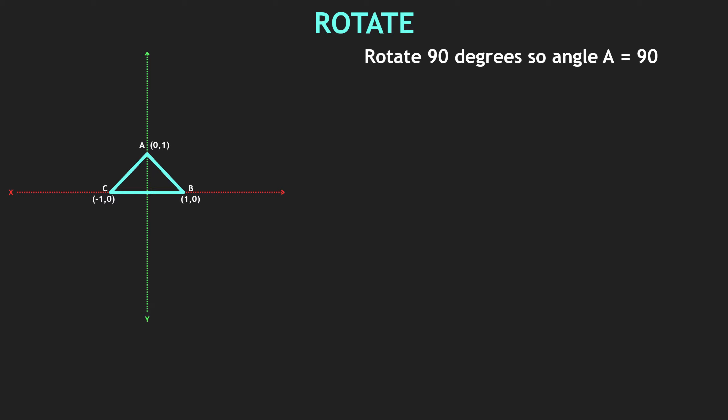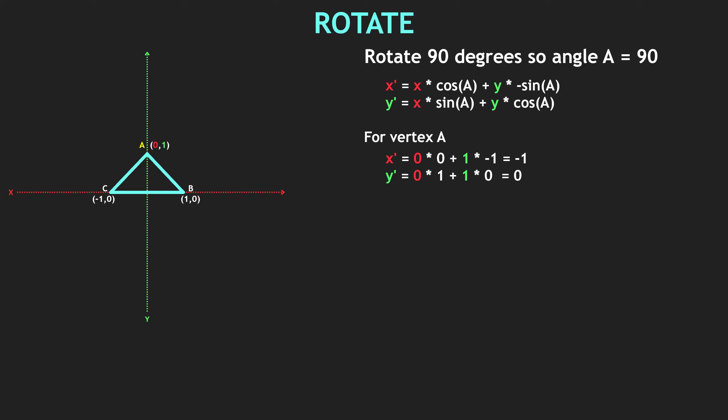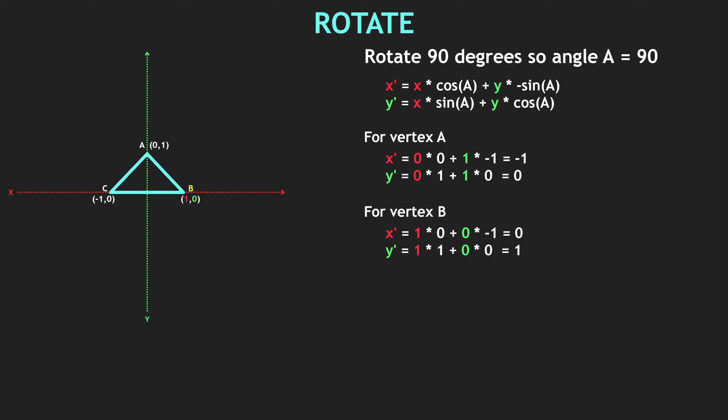Now let's go to rotation. Rotation is a bit complicated and involves trigonometry. Let's take our triangle and we want to rotate it 90 degrees. Trigonometry tells us that for any given angle A, new x = old x × cos(A) + old y × (−sin(A)), and new y = old x × sin(A) + old y × cos(A). For vertex A, we feed in the values. Remember: cos(90°) = 0 and sin(90°) = 1. By solving the formulas we get new vertex A, same for B and C, and we get our rotated triangle.